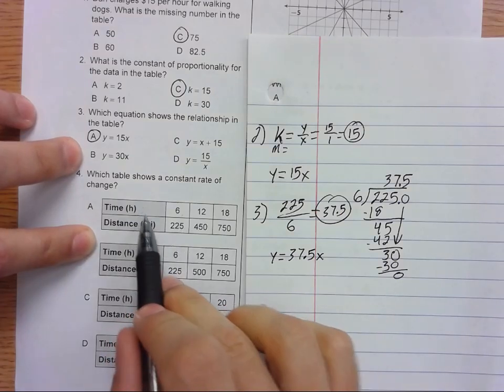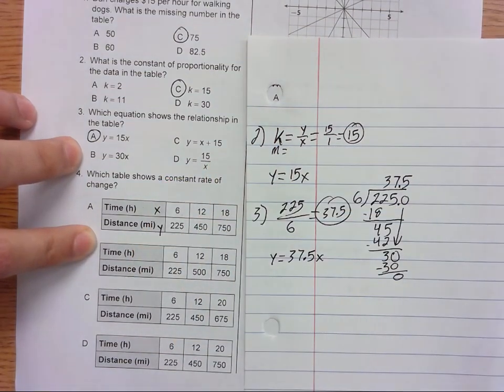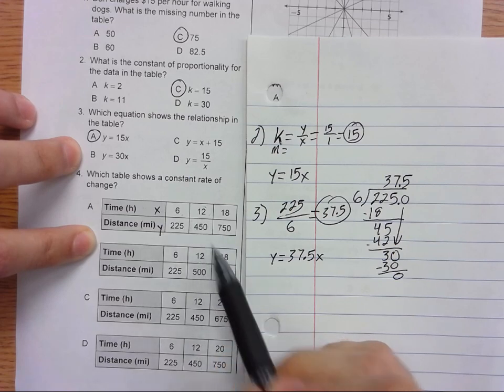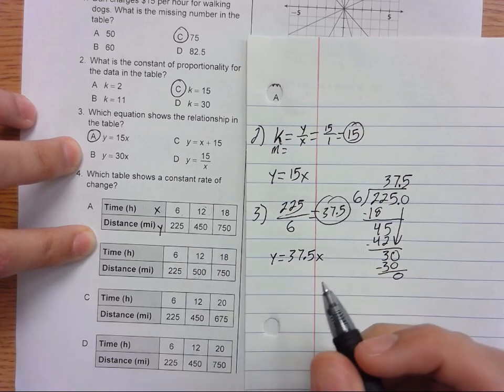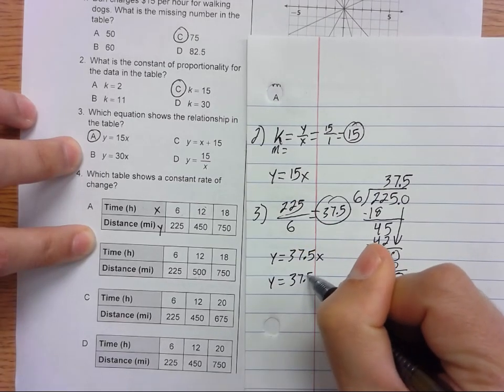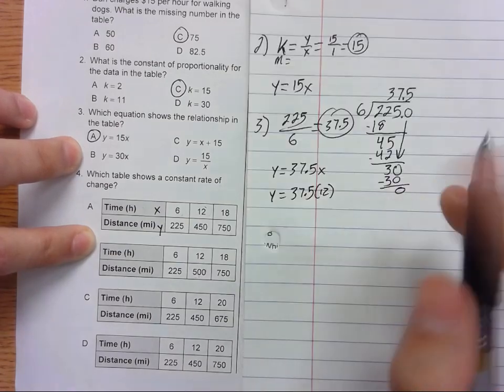So our constant is 37.5. So we could write this equation Y equals 37.5X. So let's plug it in. We know that time is X and distance is Y. So we know that when time is 12, it's either going to be 450 or 500.